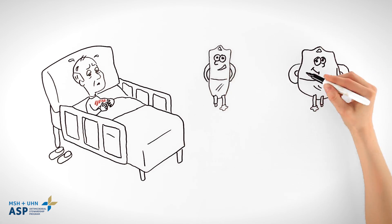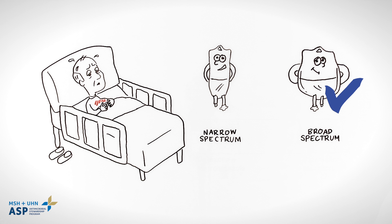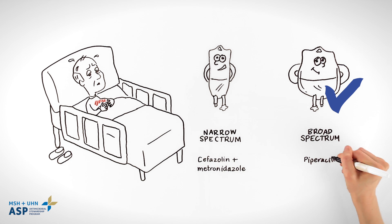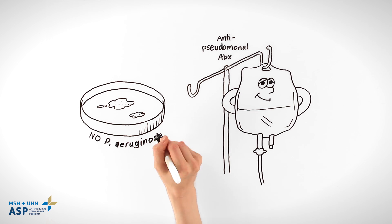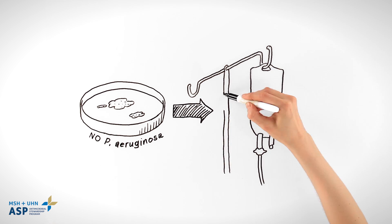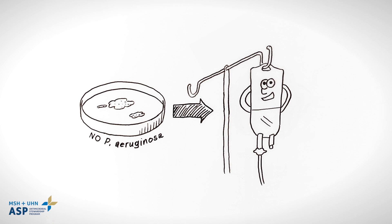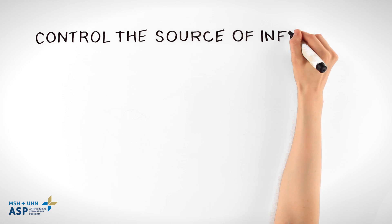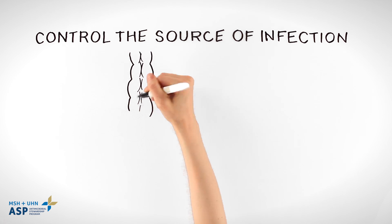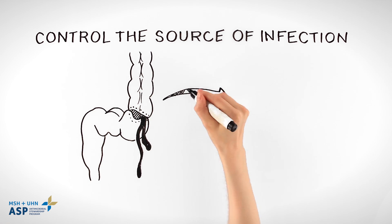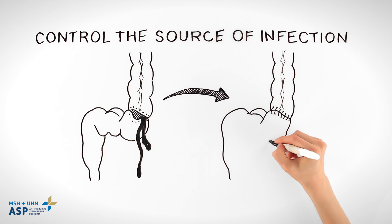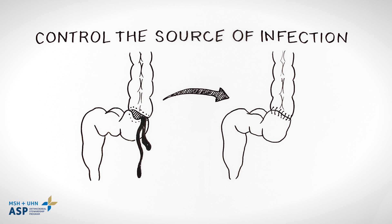For CM, a broad-spectrum antibiotic such as piperacillin-tazobactam is reasonable. If difficult-to-treat or problem bugs are not found in cultures, narrow the antimicrobial coverage. Regardless of antibiotics, adequate source control — such as abscess drainage or intra-abdominal washout — is crucial to resolution of infection.